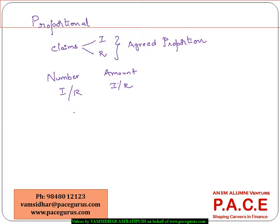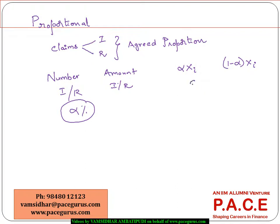If I say the retention limit is alpha percent, which means for every claim, the insurer is going to pay alpha percent of it and the reinsurer is going to pay 1 minus alpha percent. So if the individual claim amount is X_i, then from the insurer's perspective the claim amount is alpha times X_i. Even at an aggregate level, when S is the aggregate claims, the insurer's portion is alpha·S and the reinsurer's portion is (1−alpha)·S. So in proportional reinsurance, there is nothing much of a different distribution for insurer and reinsurer.